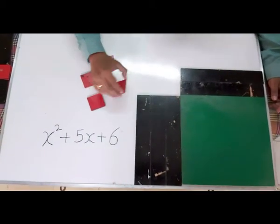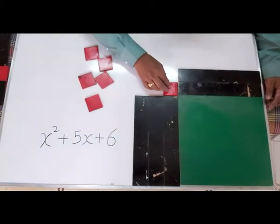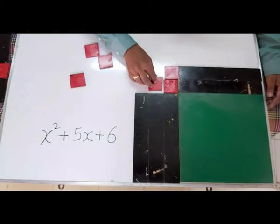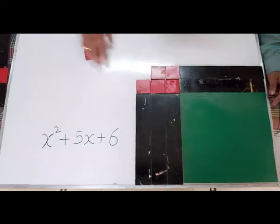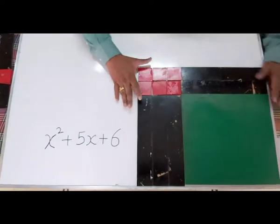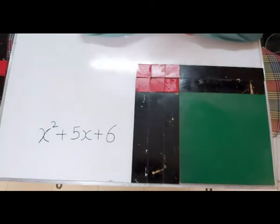Now 6 I have to put. I have to put 6. 1, 2, 3, 4, 5 and 6. Now if you see, you can find out. It's very good.